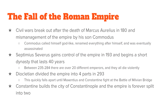Just like the Roman Republic came to an end, the Roman Empire came to an end too. When Marcus Aurelius died in 180 AD, a civil war broke out shortly after. His son Commodus wasn't very good — he was childlike, didn't pay attention, declared himself a god, renamed everything after himself, and was eventually assassinated.